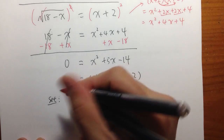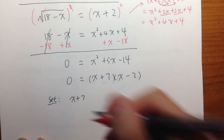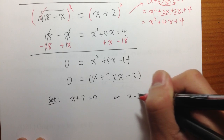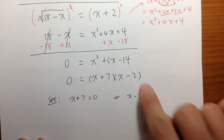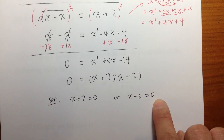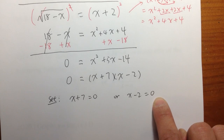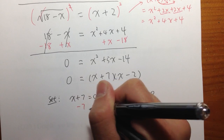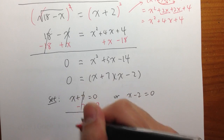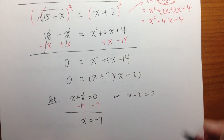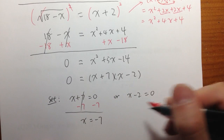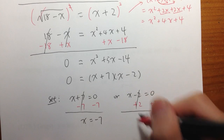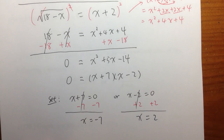Set the first one: x plus 7 equals 0. Or the second one: x minus 2 equals 0. That's the zero product property. Then we minus 7 on both sides and get x equals negative 7. And for x minus 2 equals 0, we add 2 on both sides and get x equals positive 2.